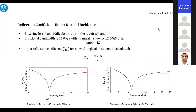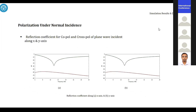These are the simulation results carried out using CST. The criterion for absorption is minus 10 dB, which is the minimum criteria. We can see that the absorption bandwidth is 8.192 GHz, with a fractional bandwidth of 65.04%. This is the polarization under normal incidence. Due to the symmetrical geometry of the structure, the reflection coefficient for co-polarization and cross-polarization of a plane wave incident along X and Y axes are identical, showing its polarization-insensitive behavior.